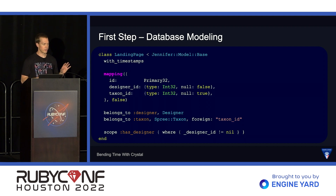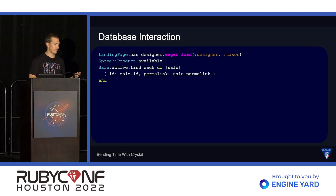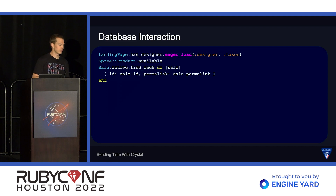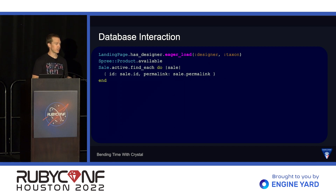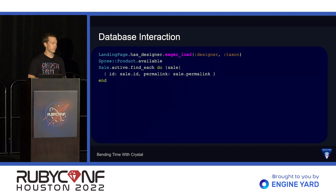Now that we've set up our database models, let's look at how we would interact with them. This is going to look pretty familiar because it's the same as Active Record. For the first example, we have a class LandingPage with a scope has_designer — we tell it to eager load the associations for designer and taxon. In the second example, we have a SpreeProduct and we call a scope called available. And in the third example, we see how we iterate through data and access attributes the same as in Ruby — we have Sale, call a scope called active, and use a find_each method to gracefully iterate through large data sets, loading 1,000 records at a time and accessing attributes like sale.id and sale.permalink.